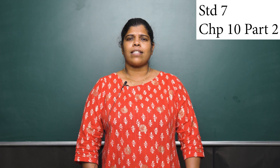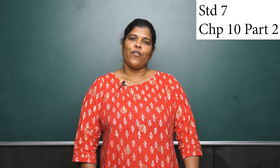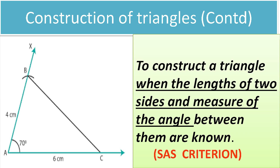Let us take the next construction: to construct a triangle when the lengths of two sides and the measure of the angle between them are known. If you see in the figure, two sides are given — BA and AC — and the measure of one angle between them is given, so it becomes the SAS criterion.